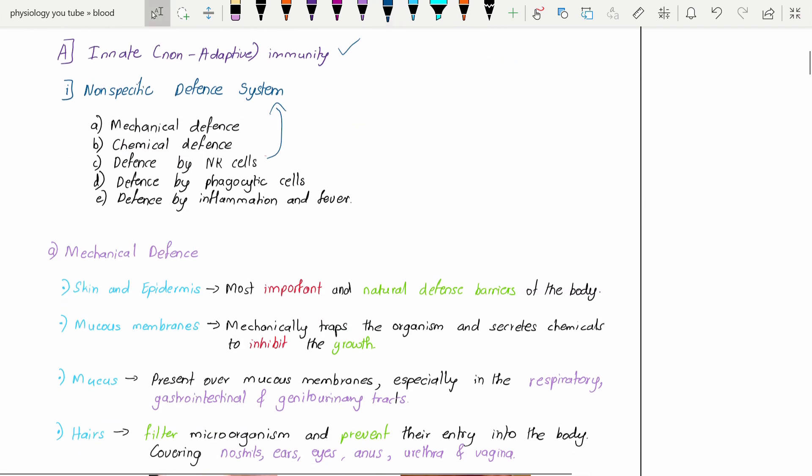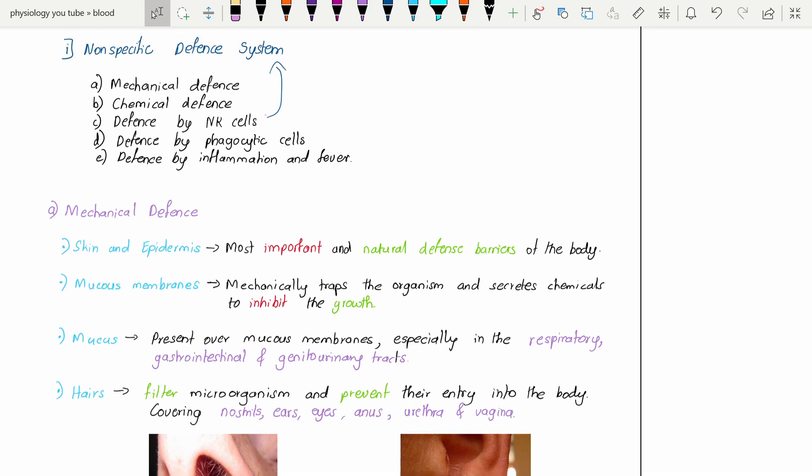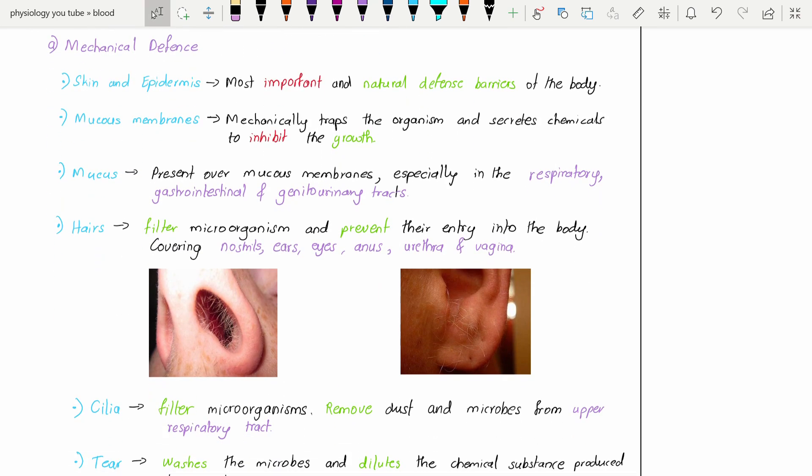In non-specific defense system: mechanical defense, chemical defense, defense by natural killer cells that is slightly specific, defense by phagocytic cells, defense by inflammation and fever. First we will study mechanical defenses. Skin and epidermis - we know that skin is the largest organ in the human body, so this is the most important and natural defense barrier of the body.